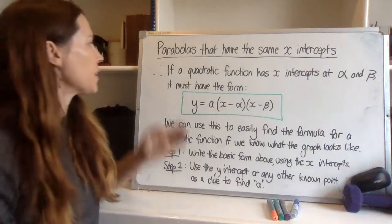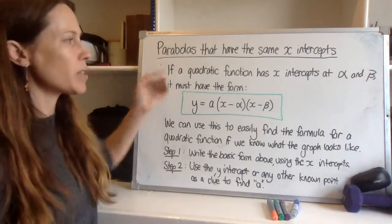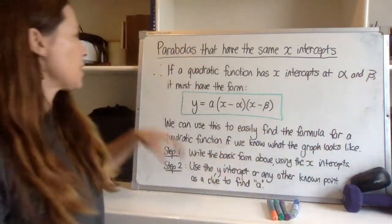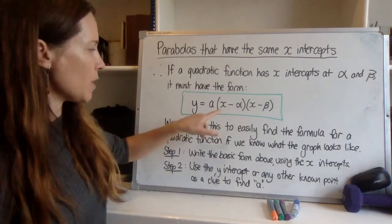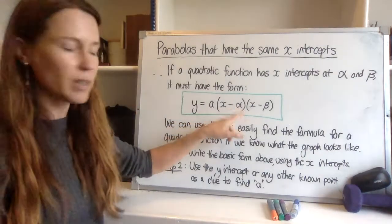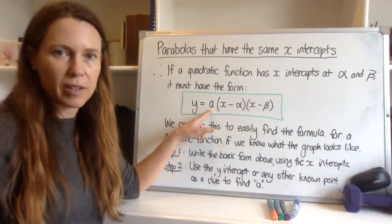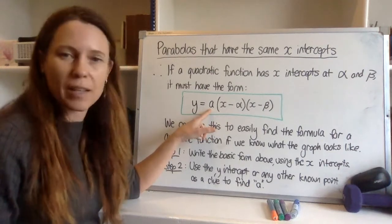So then we can reason that if a quadratic function has x-intercepts at two known spots, and for now we're going to call those known spots alpha and beta, then our quadratic function must have this form. It must be x minus alpha times x minus beta and it must have another constant out the front. Now that constant could just be one if it's a monic one but it could take some other value as well.